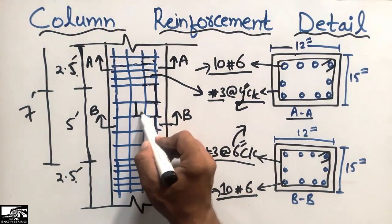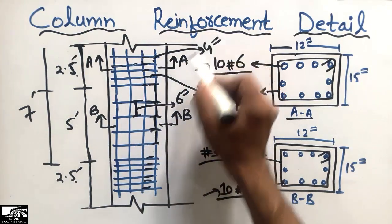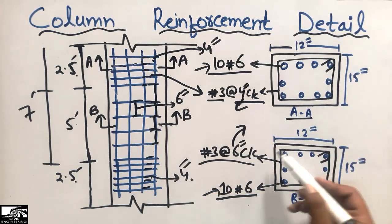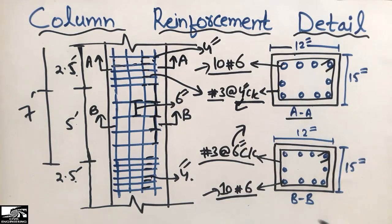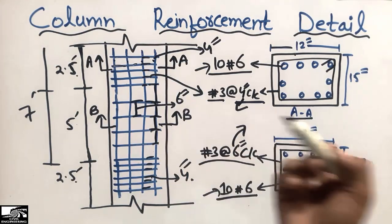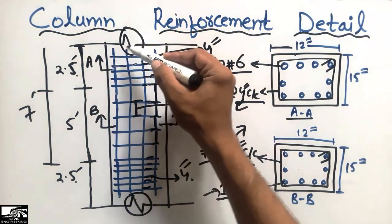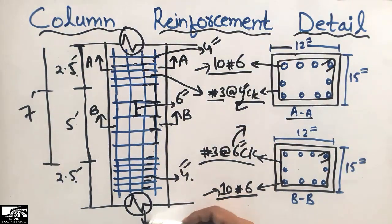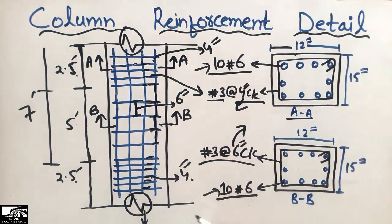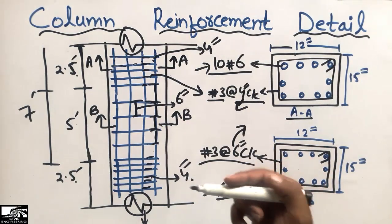The distance between two ties is six inches in section B while it was four inches in section A. That is the reason we provide two different sections for one column. This column was taken from actual field drawings. The continuation sign shown indicates the column continues in both directions — it may continue to the upper floor and the lower floor. I took this figure from field drawings to share knowledge about column reinforcement detail.